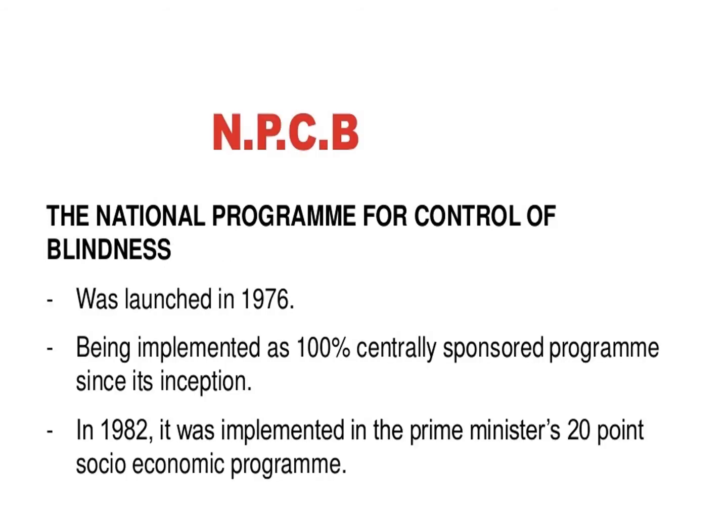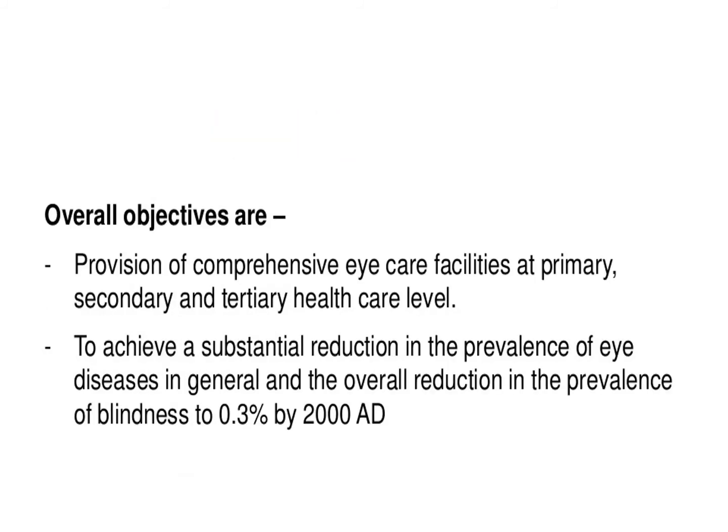The National Programme for Control of Blindness was launched in 1976 and has been implemented as a 100% centrally sponsored program since its inception. In 1982, it was included in the Prime Minister's 20-point socio-economic program. The overall objective of NPCB is provision of comprehensive eye care facilities at primary, secondary and tertiary health care levels, to achieve a substantial reduction in the prevalence of eye disease and reduce overall blindness prevalence to 0.3%.